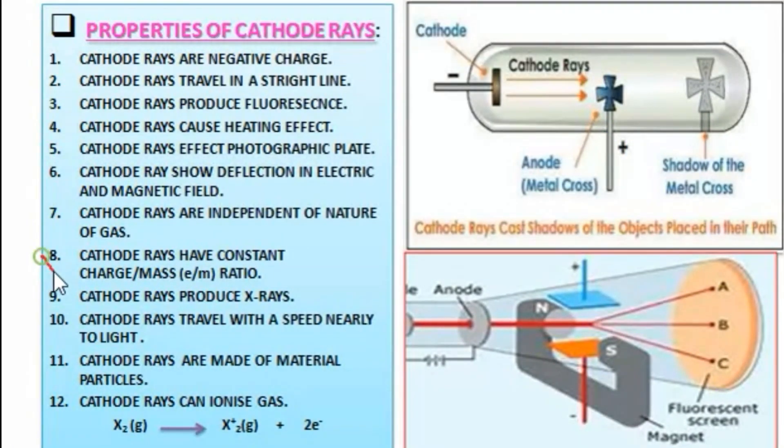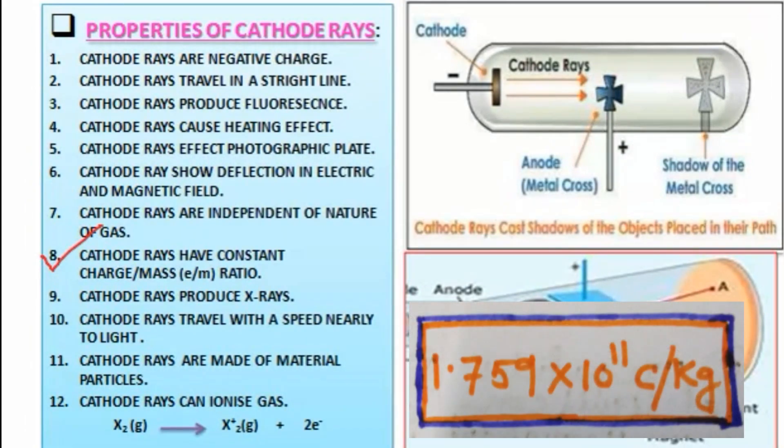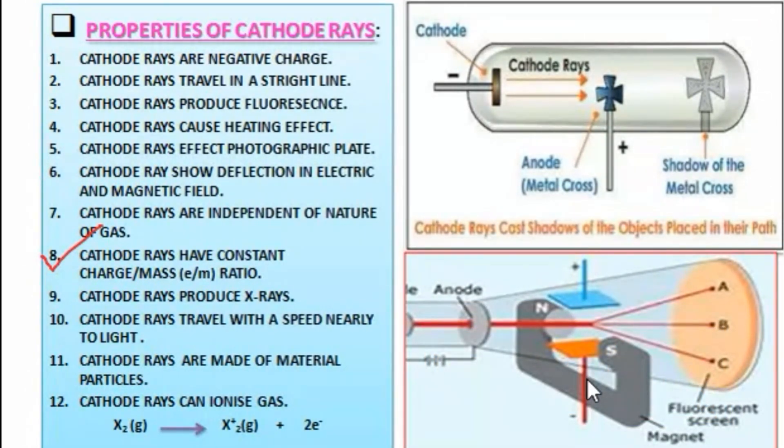Property number eight: cathode rays have constant charge by mass ratio. The charge by mass ratio is constant for cathode rays. Thomson calculated the e/m ratio by balancing the deflection of cathode rays in magnetic field and electric field. It was found to be 1.759 × 10^11 coulombs per kilogram, a constant value. The e/m ratio of cathode rays was found to be independent of the nature of gas taken in the discharge tube and the materials of the cathode.